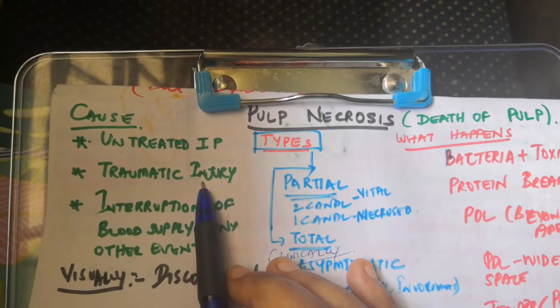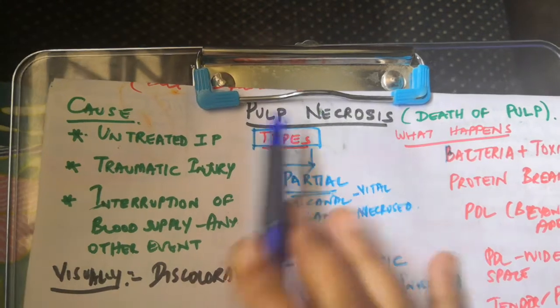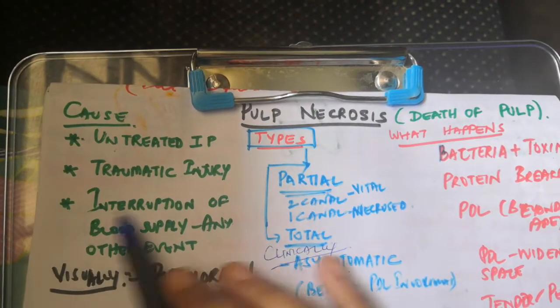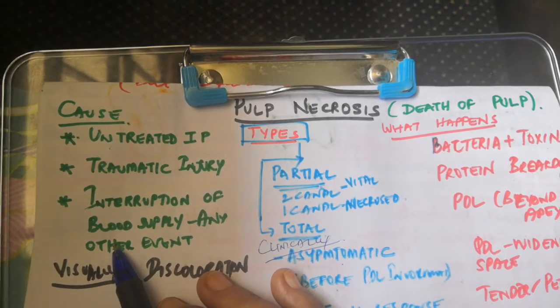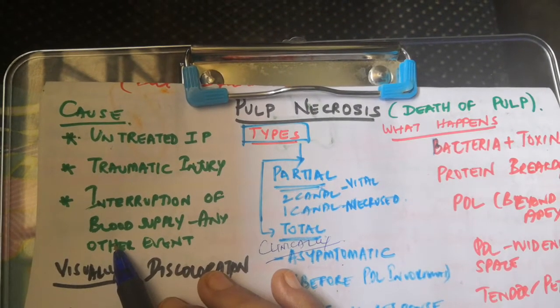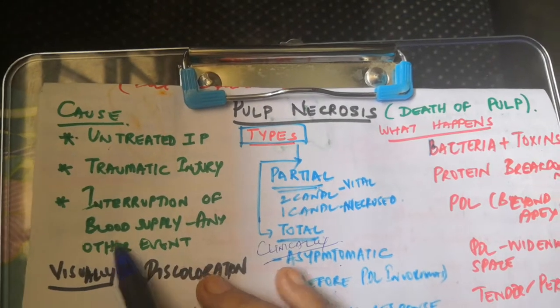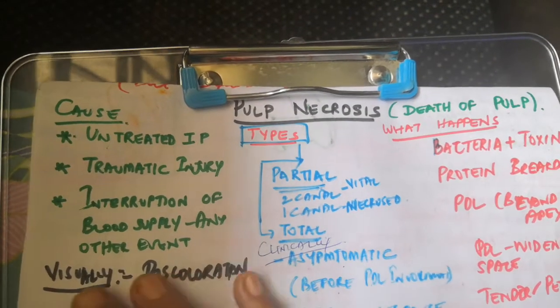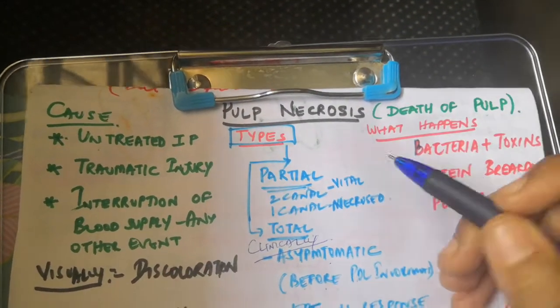Necrosis can also result from a traumatic injury. Any type of event that leads to interruption of the blood supply will ultimately lead to pulp necrosis. These are the main causes.